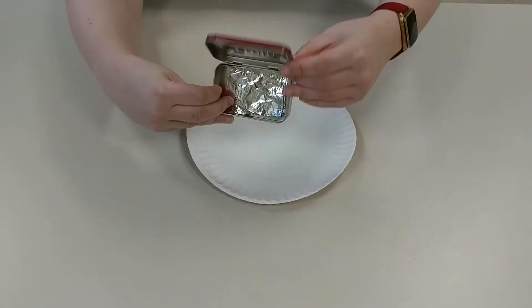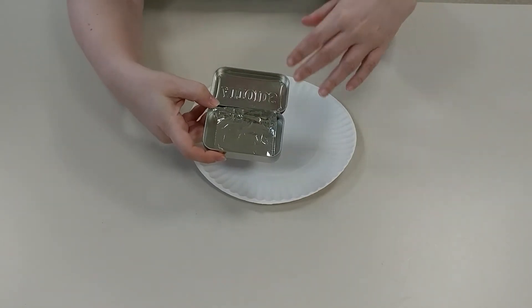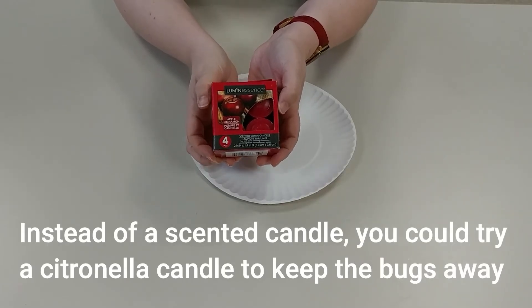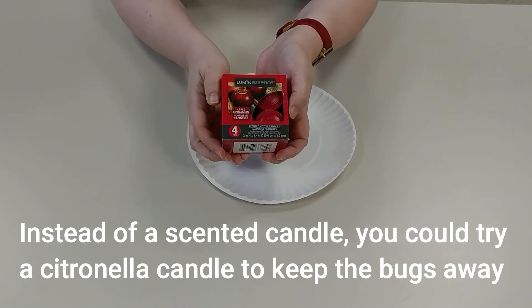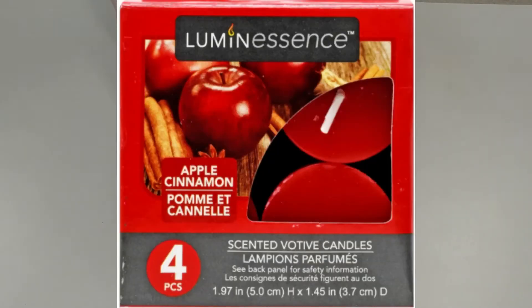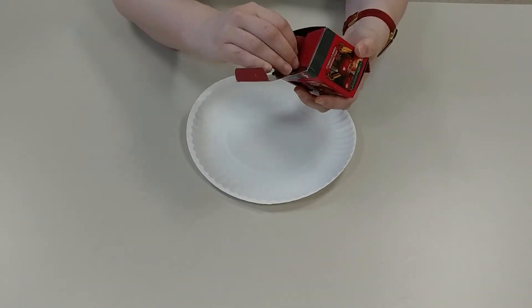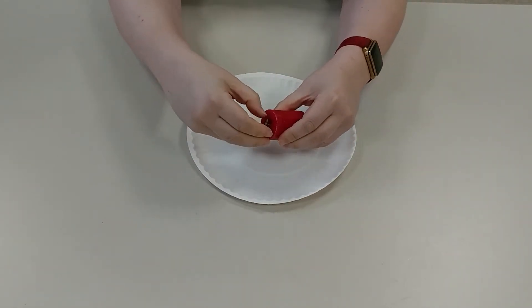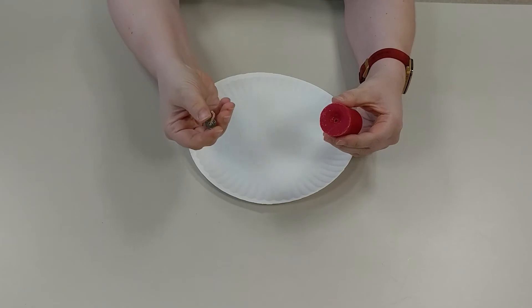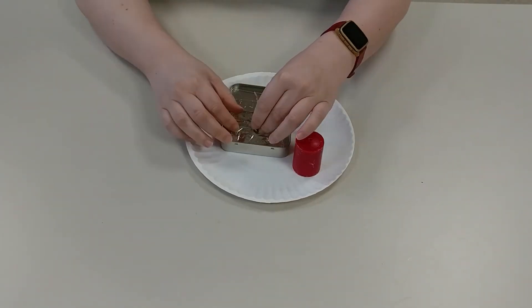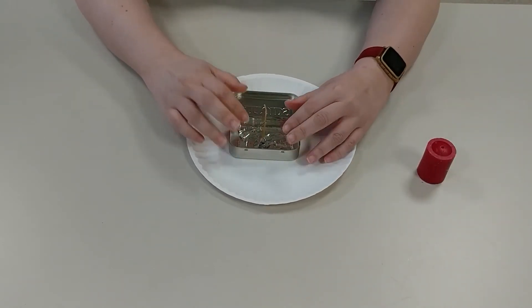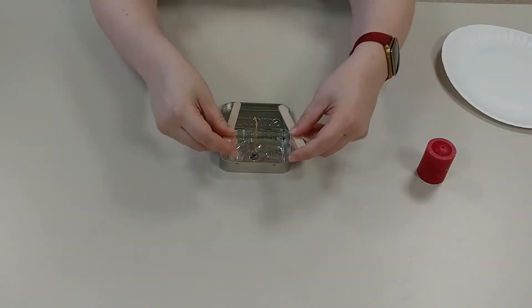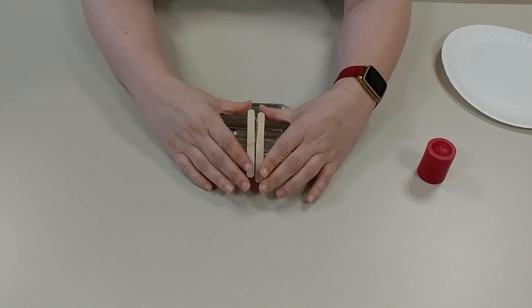I have my freshly washed and dried tin with my tin foil already added. I'm going to be making mine apple cinnamon spice scented, using these candles from Dollar Tree—they were four for a dollar. I'm going to pull one out, take the wick straight out, and add that to my tin.